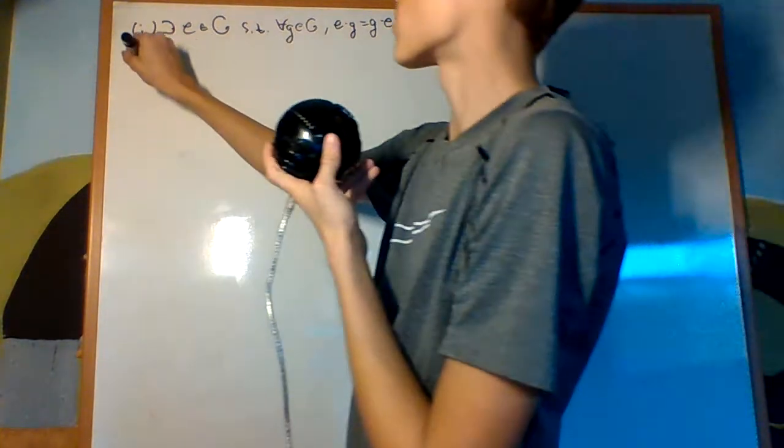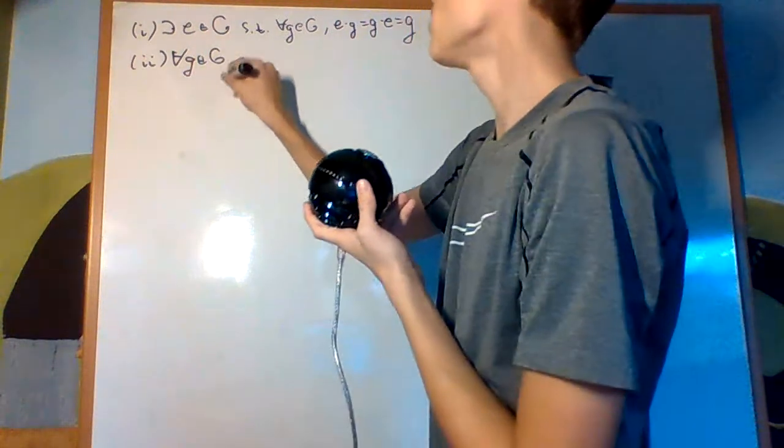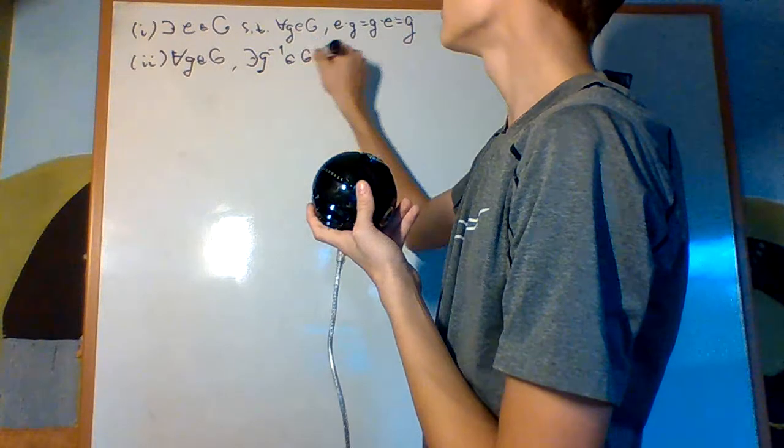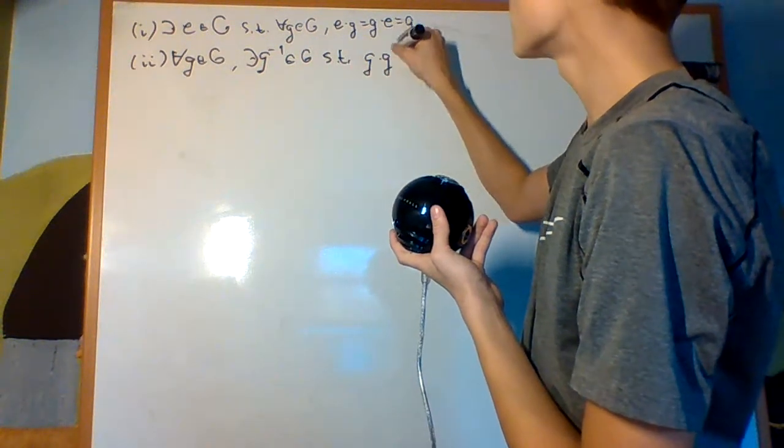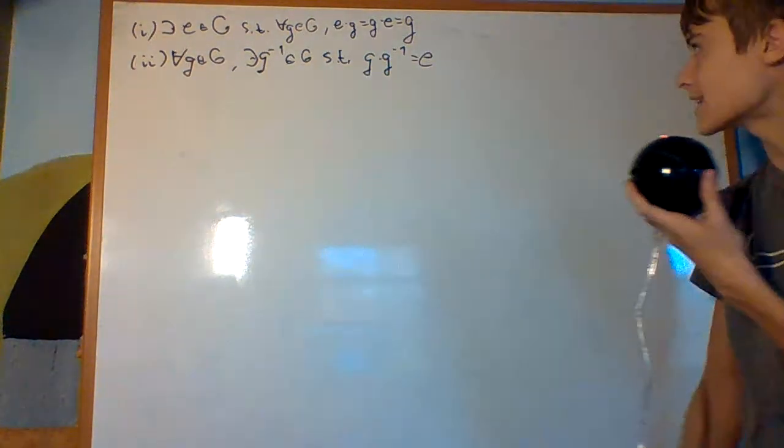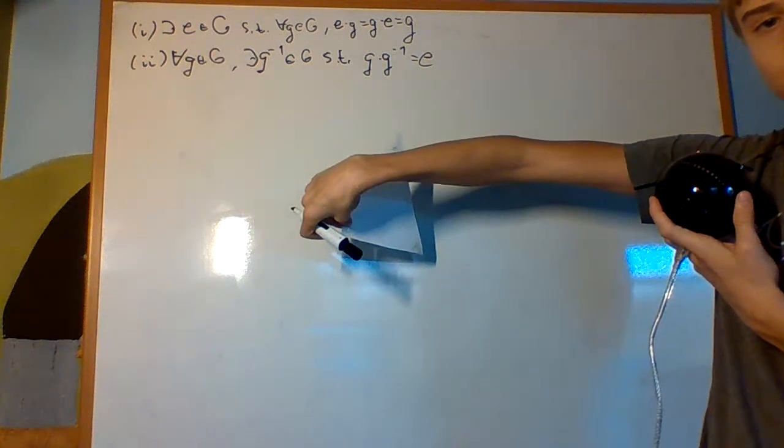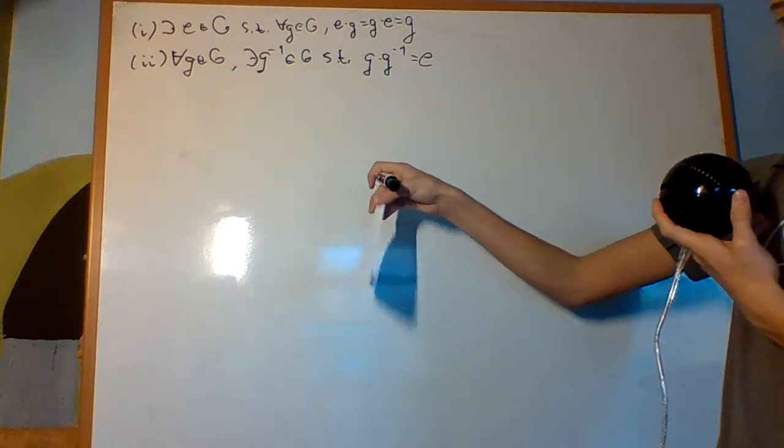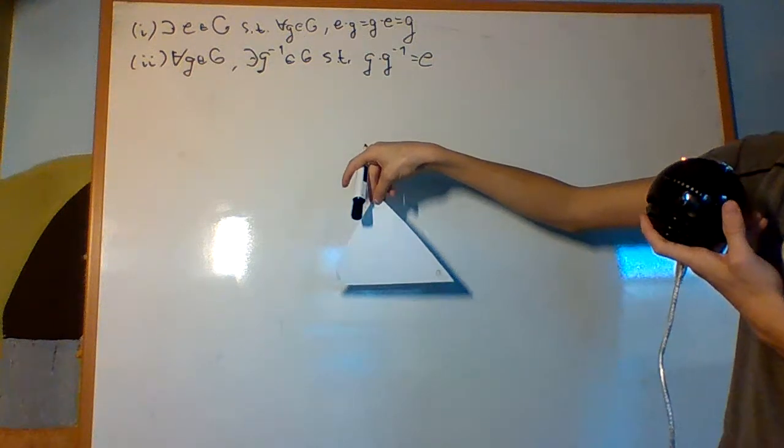So, our second requirement is that there are inverses. So, for every G in the group, there exists G inverse, an element of the group, such that G times G inverse is equal to E, the identity. So, for example, if I were to do that rotation on the triangle, right, just do the opposite rotation. If I were to do the flip like that on the triangle, if I just flip it back, it's its own identity.